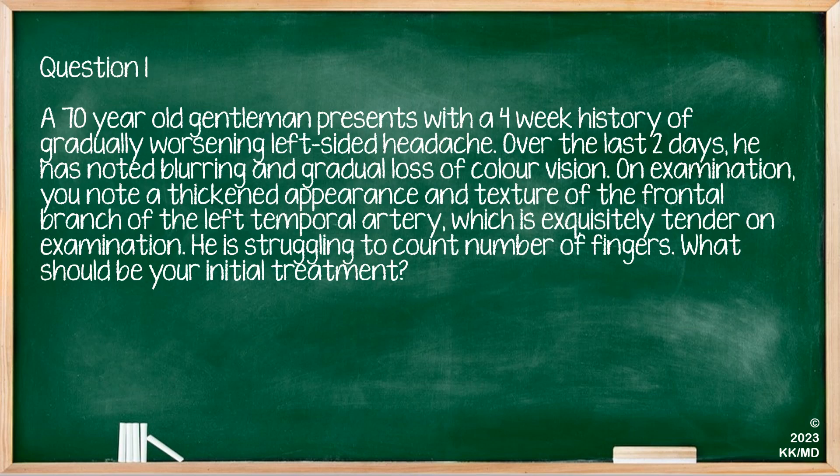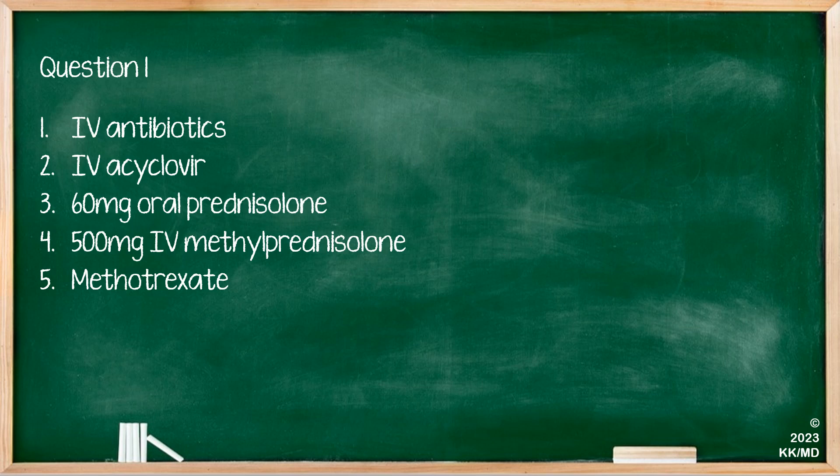Question 1: A 70-year-old gentleman presents with a four-week history of gradually worsening left-sided headache. Over the last two days he has noted blurring and gradual loss of colour vision. On examination, you note a thickened and tender frontal branch of the left temporal artery, and he is struggling to count fingers. What should be your initial treatment? Options: A) IV antibiotics, B) IV acyclovir, C) 60 mg oral prednisolone, D) 500 mg IV methylprednisolone, E) Methotrexate.